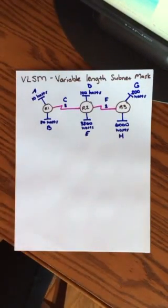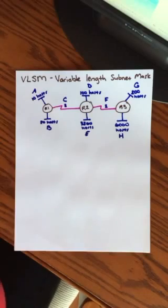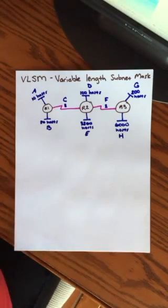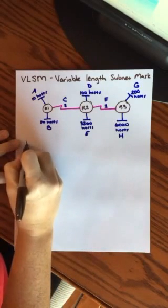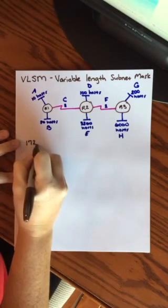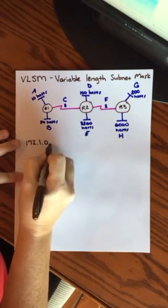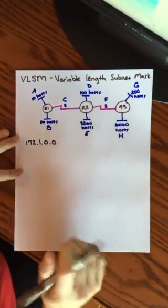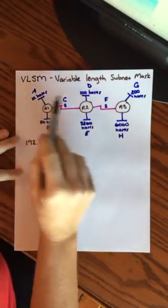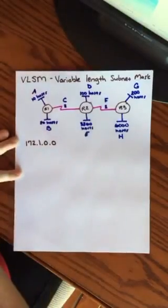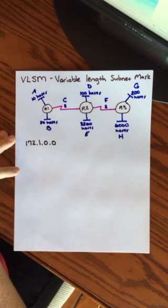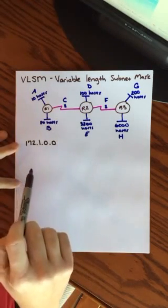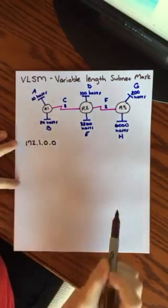Alright, so I'm going to go through this problem for variable-length subnet masks so that we can use one network address. I'll use the network address 172.1.0.0 and break it up into subnetworks for all these different LANs and then two WANs.